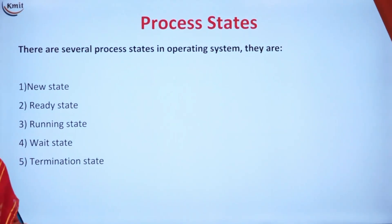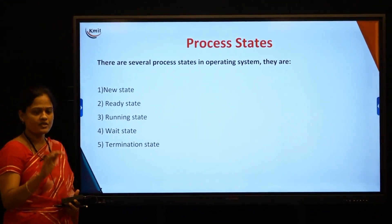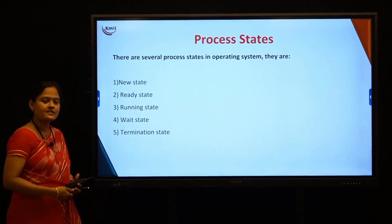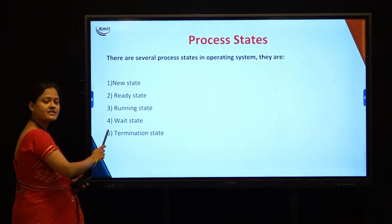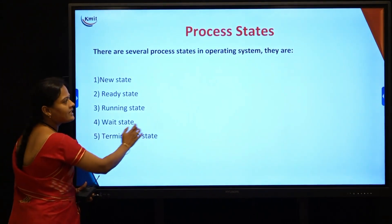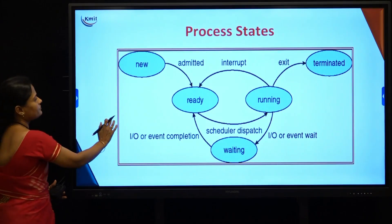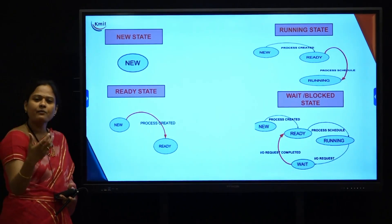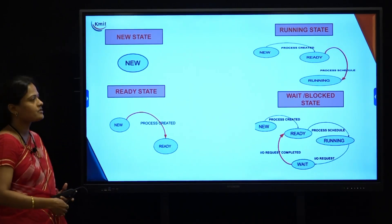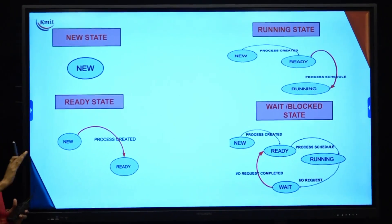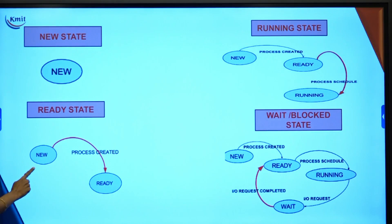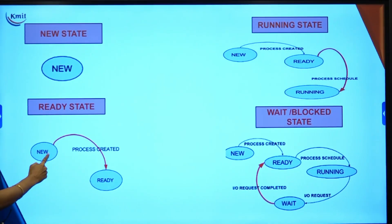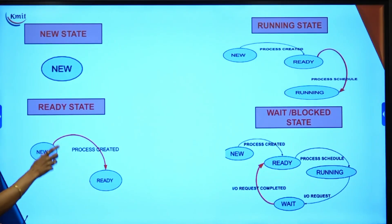Now we have seen a process and its memory attributes. We will move on to the different states a process exists in: new state, ready state, running state, wait state, and termination state. In the new state, whenever a process is being created or initialized, that process exists in the new state — it is not yet ready for execution. Once initialized, it is in the new state. When a process is created and loaded into main memory, it moves to the ready state, meaning the process is ready for execution but has not yet been allotted to the CPU.